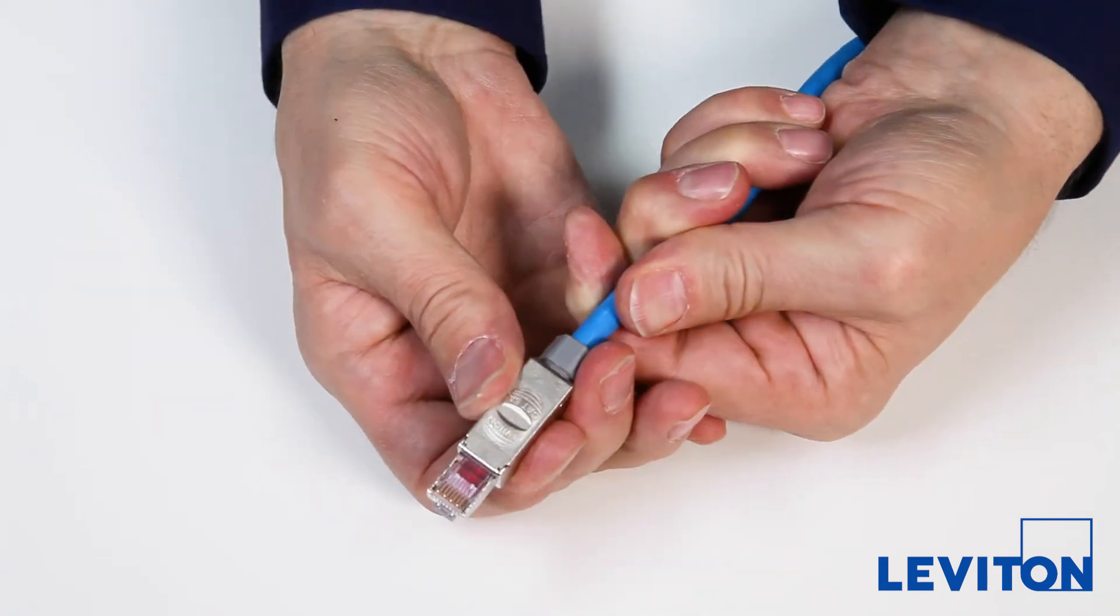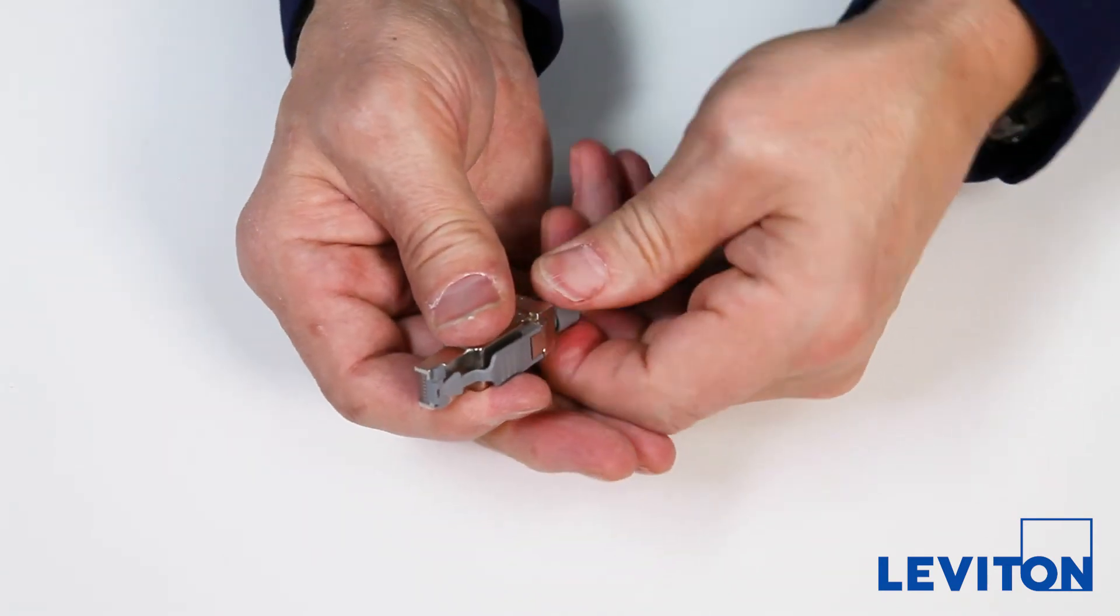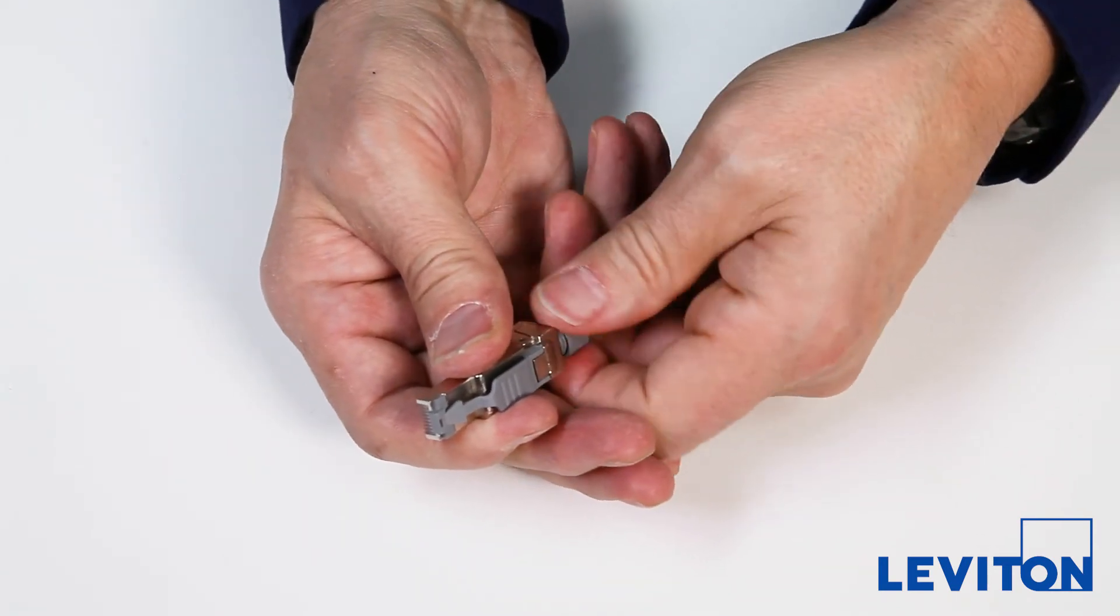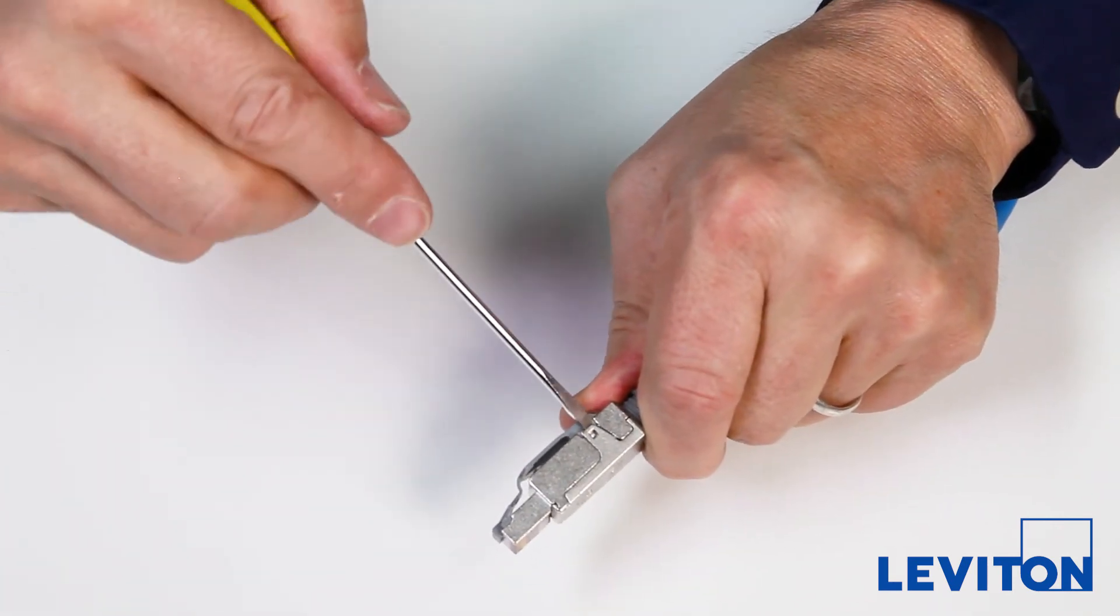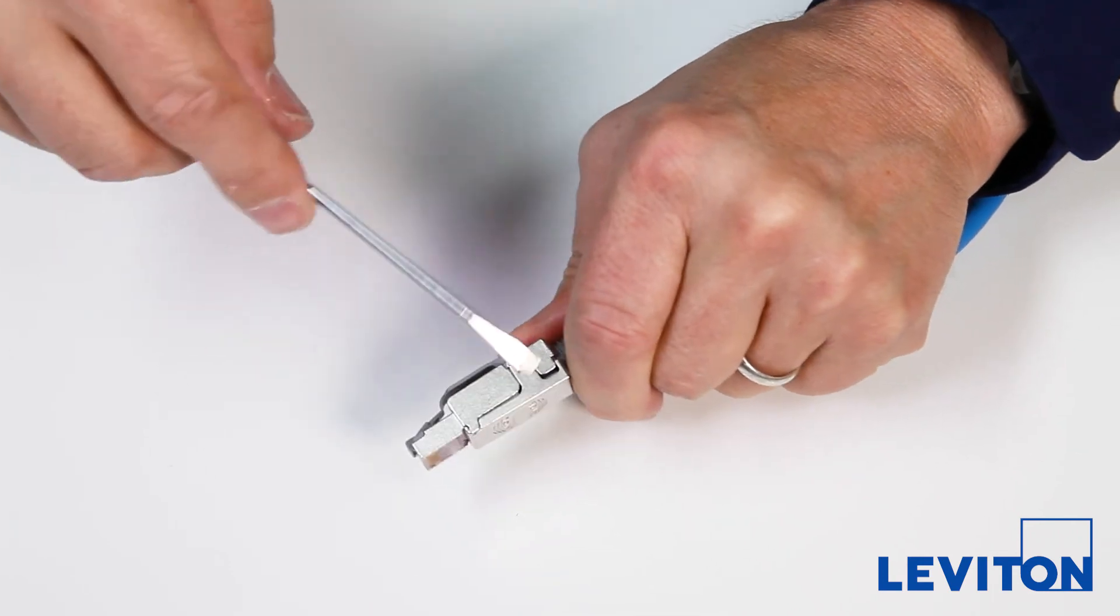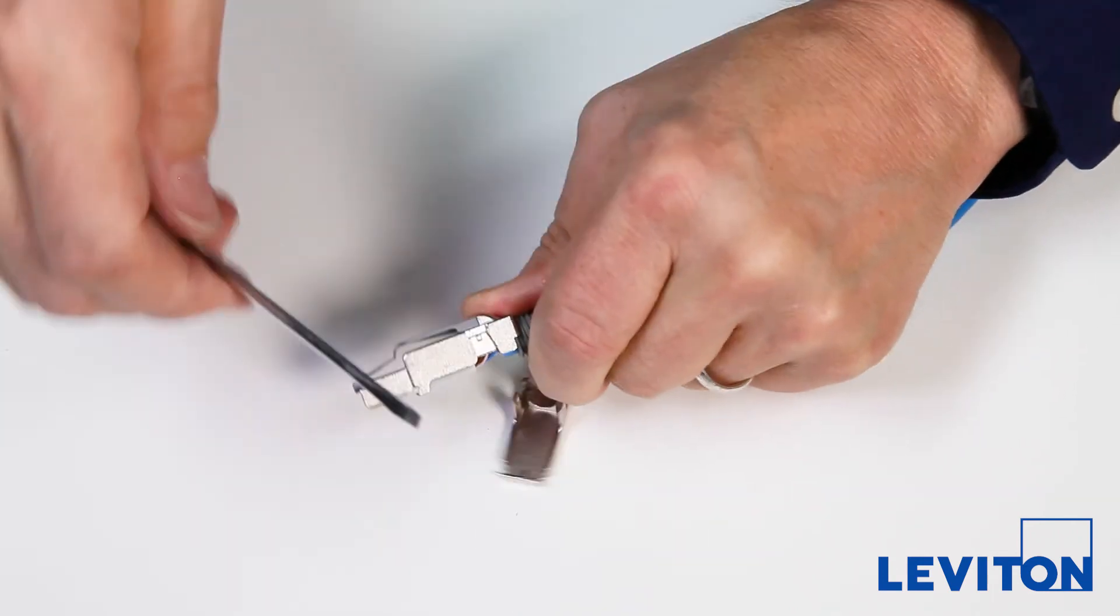The plug is now ready for testing. To disassemble the plug, unscrew the nut and slide it back along the cable. Insert a small flat blade screwdriver into each of the latch points at the back of the plug and gently rotate until the plug cover pops off.